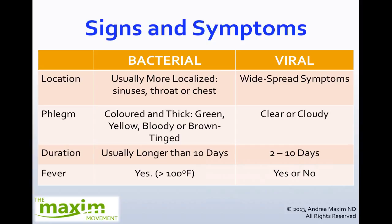When it comes to viral infections, what we're looking at are more widespread symptoms. This is when you get the shakes, muscle aches, sweats — it's not necessarily localized to one specific place. There may or may not be phlegm present, and usually it's clear or can be a little bit cloudy, but certainly not as thick as what we get with bacterial infections. The duration of a viral infection is usually two to ten days, and you may or may not have a fever. Take a moment to go through this video again to really understand the difference between a bacterial and viral infection.